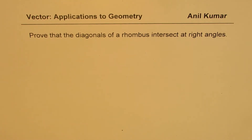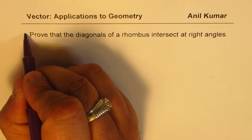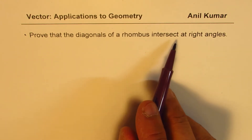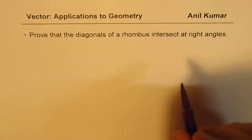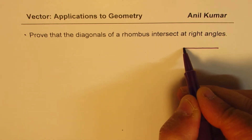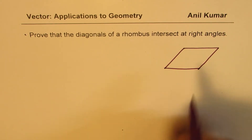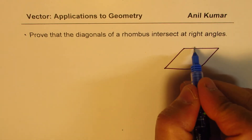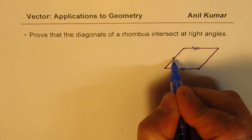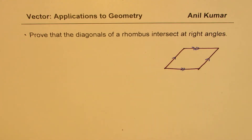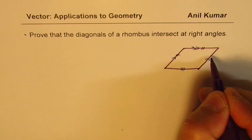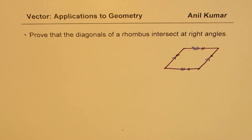I'm Adil Kumar, sharing with you a few applications of vectors to geometry. Here is a very interesting question: you need to prove that the diagonals of a rhombus intersect at right angles. A rhombus is a quadrilateral where opposite sides are parallel and equal — it's a parallelogram where all sides are equal.